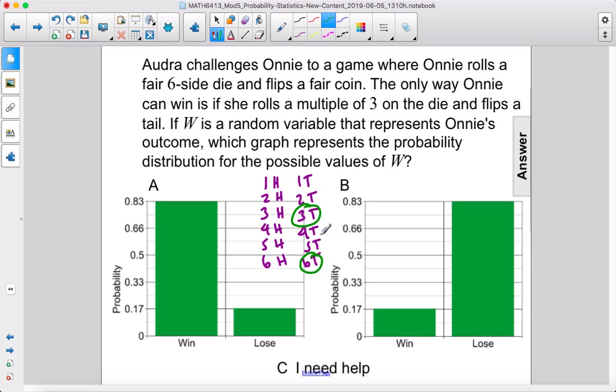So that is two out of 12, or one out of six. Therefore the answer is B. There's only a 0.17 chance that she's going to win and there's a 0.83 chance that she's going to lose.